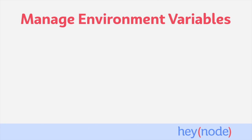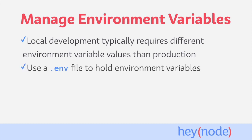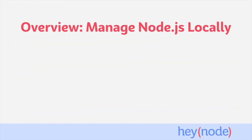Another consideration when developing locally with Node.js is how to manage your environment variables. When you're in development, your application will typically use different environment variable values than your production application will. We recommend using a .env file to hold all of your environment variables when you're developing locally. You can then use the dotenv package in order to load them.